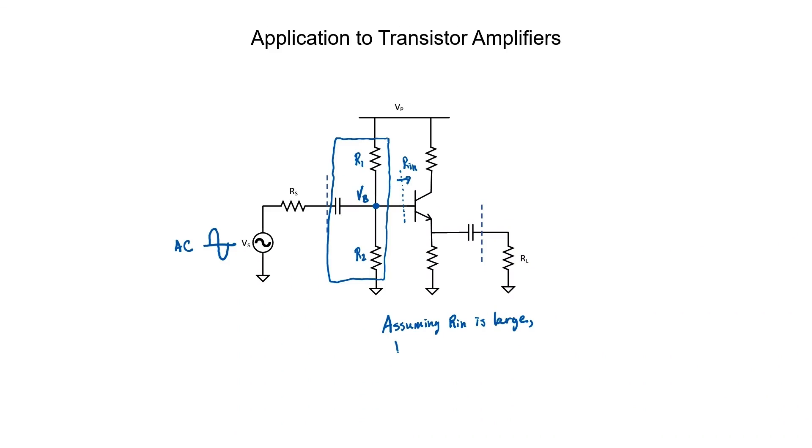Assuming then that the input impedance can be neglected in the calculation of the base voltage, the base voltage is just a fraction of the DC power supply voltage plus our AC signal which goes right through the capacitor. There's also a voltage divider set up by the source resistance R sub S, but we're going to ignore it for the time being. If the capacitor is too small, then the signal is going to be attenuated a little bit, so that's something you have to be aware of.